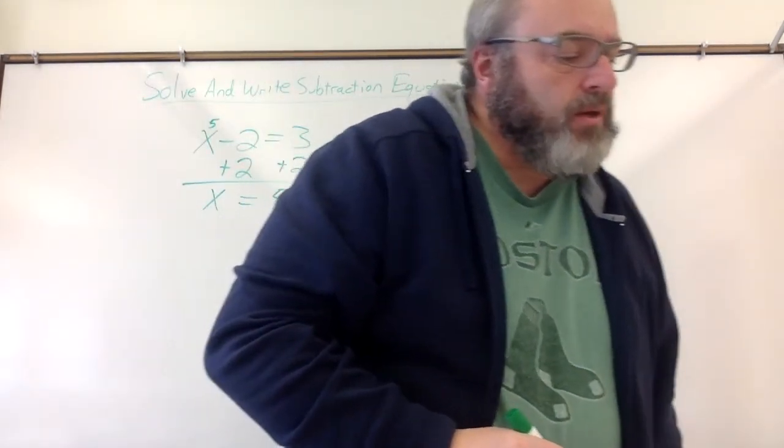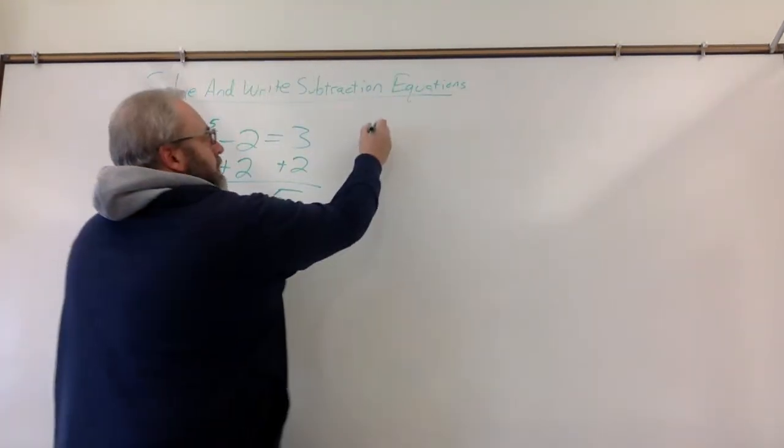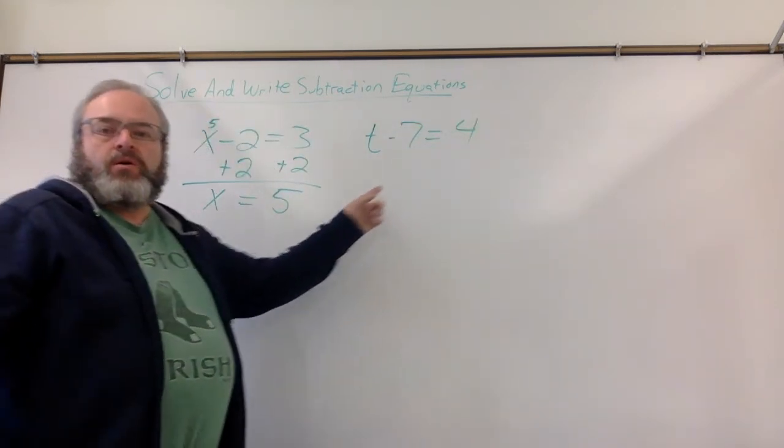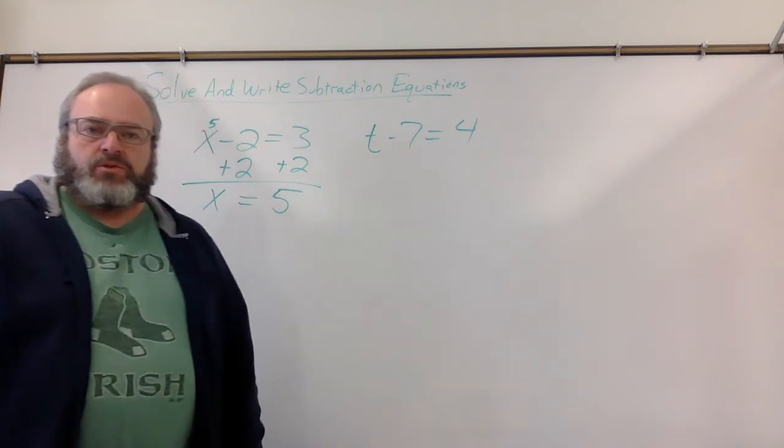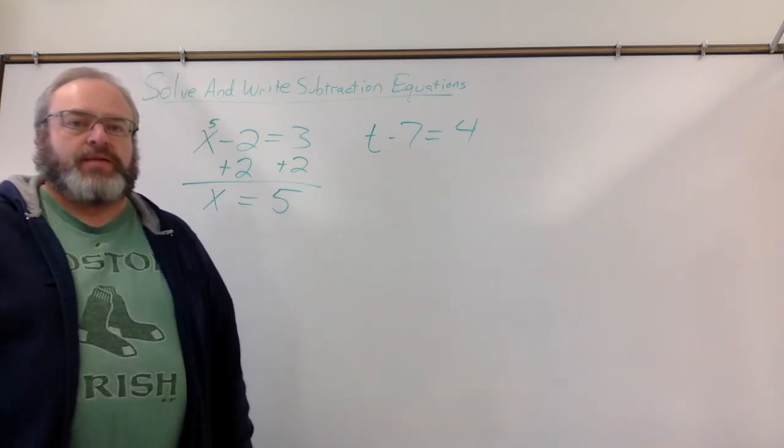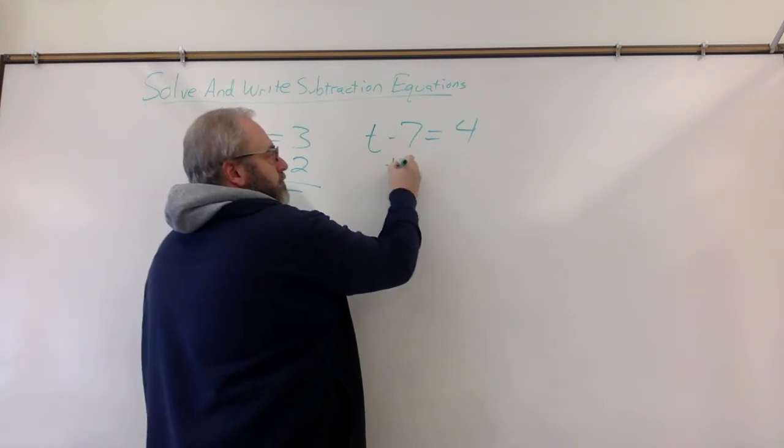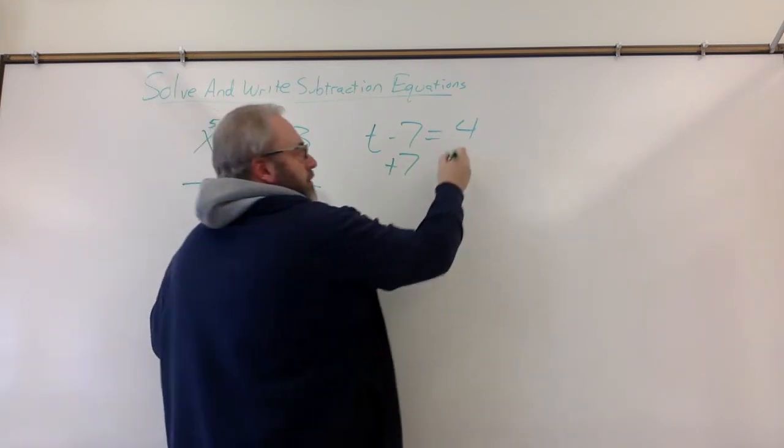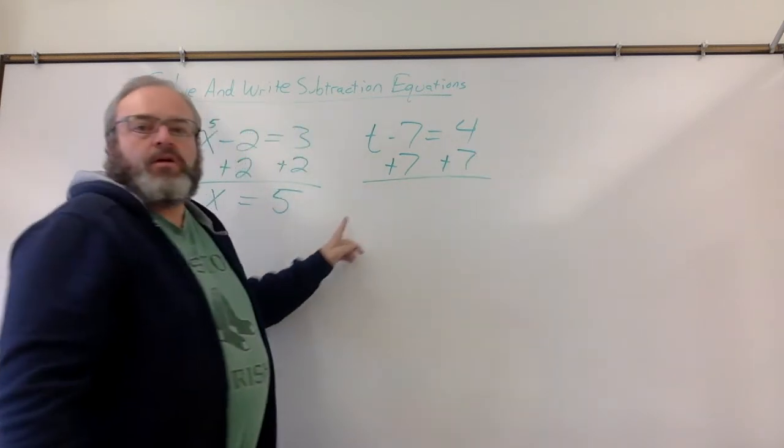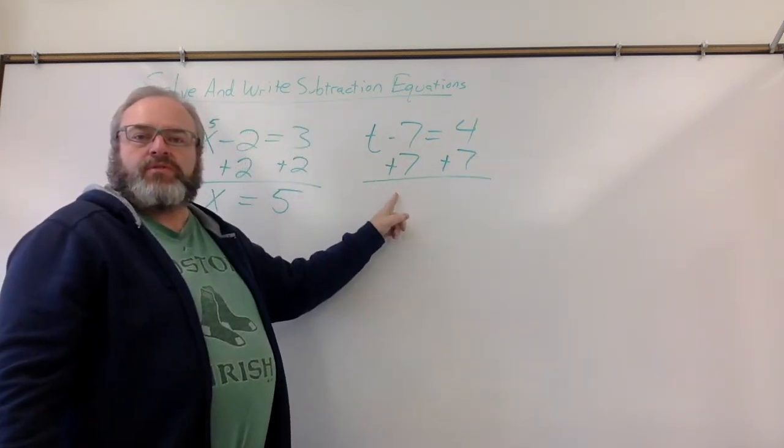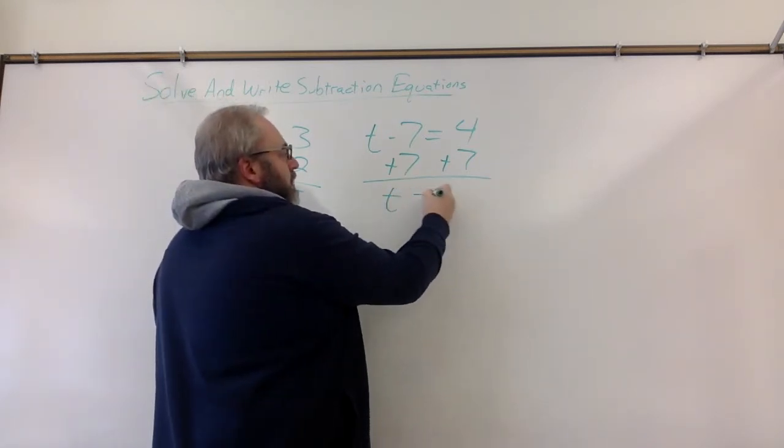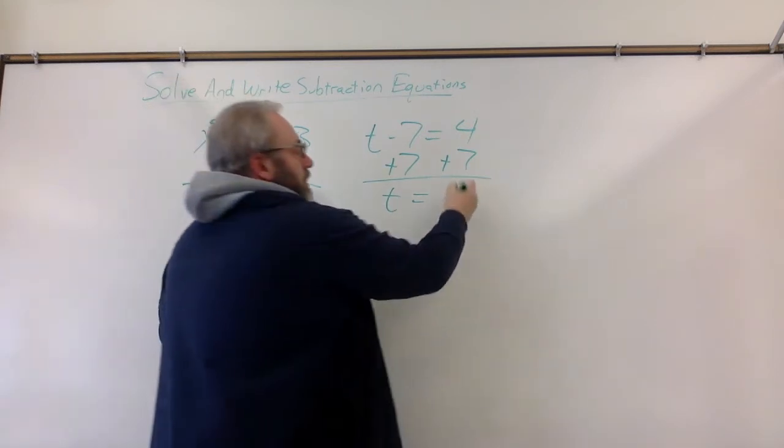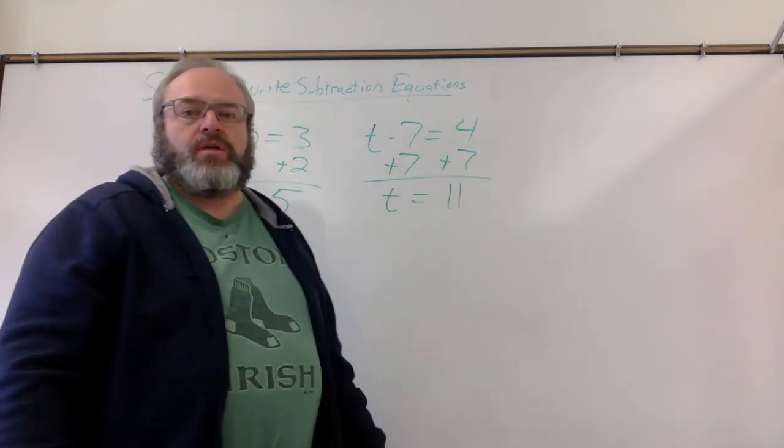Let me show you another one. What if we had t minus 7 equals 4? We want the minus 7 to cancel out, so we're going to do the opposite of subtracting 7, which is adding 7. But whatever we do to one side, we've got to do to the other. Our minus 7 and our plus 7 cancel each other out, leaving t. 4 plus 7 is 11. So our answer is 11.